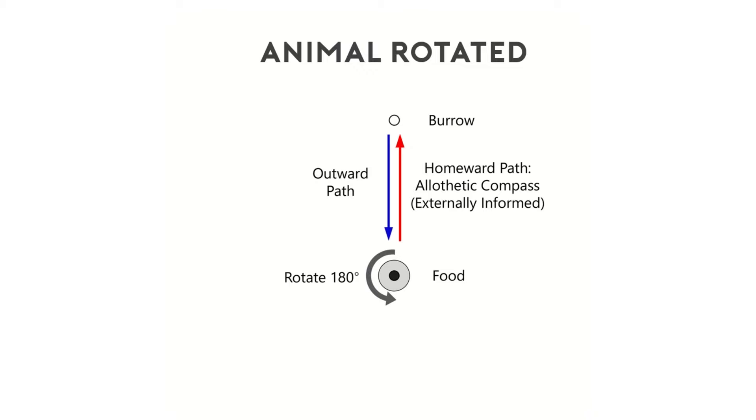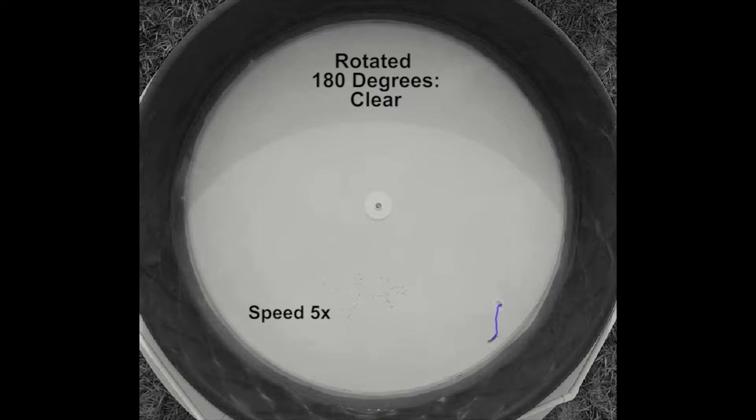If animals oriented in the direction of their homes despite their rotation, we could conclude that they used allothetic cues, or those external to the body, for orientation. If animals oriented away from their homes after being rotated, we could determine that they used idiothetic cues, or cues anchored internal to the body, for orientation.